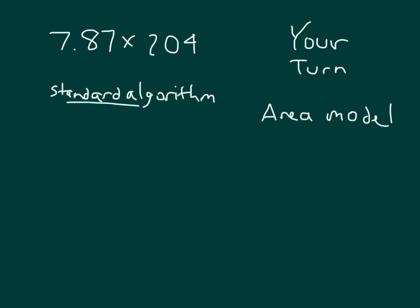Okay, it's your turn. Go ahead and work this problem out using the standard algorithm and area model. See if your partial products match up. You can start with an approximation here of 8 times 200. So your approximate answer should be close to 1,600, it looks like. Pause the video and set up the problem. Do your work.